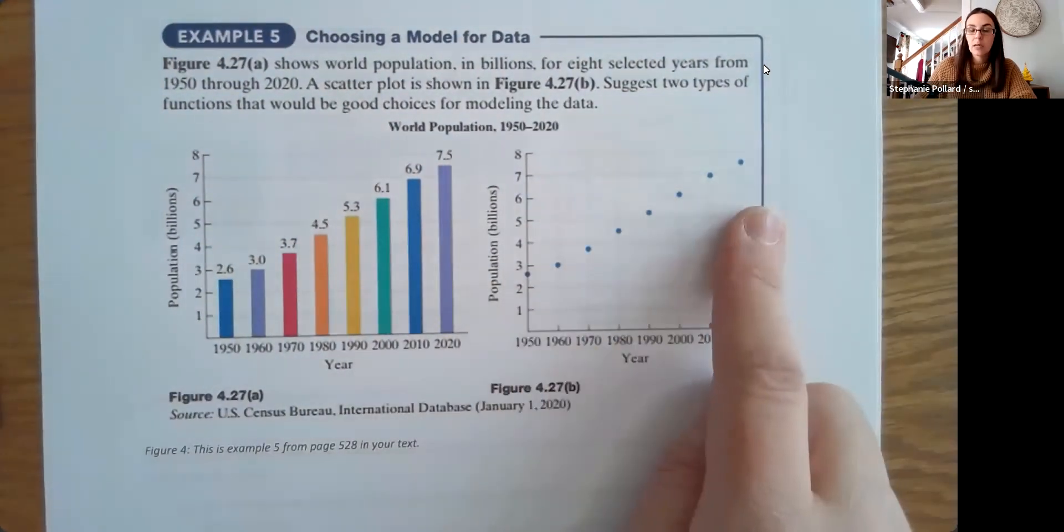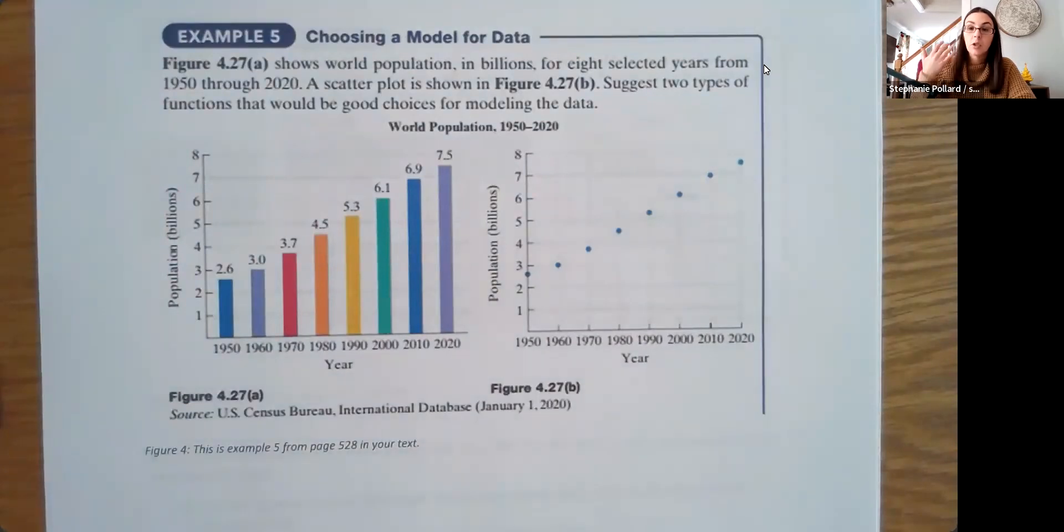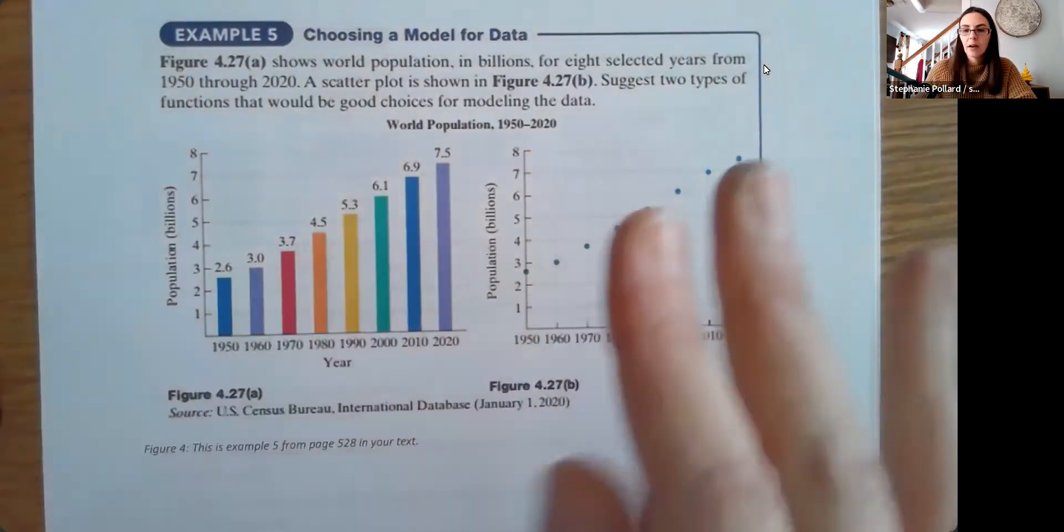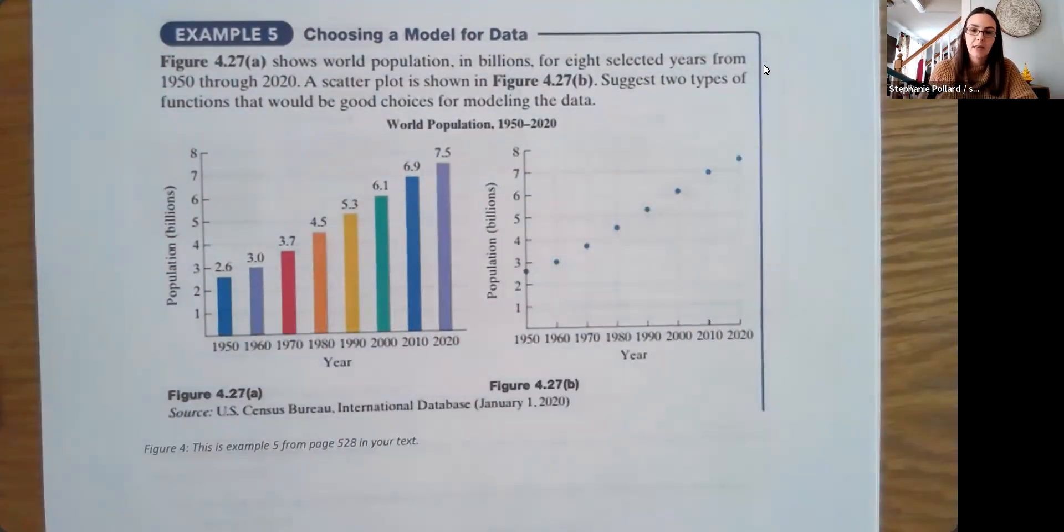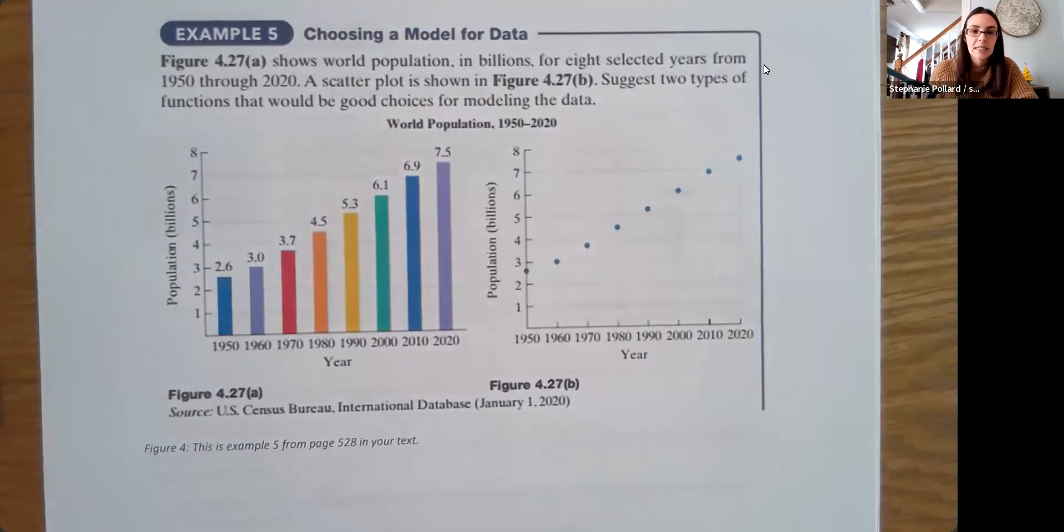And again, that scatter plot tends to be mostly what we do when we're trying to graph initial information to see if there's a pattern. We do like bar graphs too, but if we're looking for that relationship, if there's a pattern in the data, we typically do those scatter plots instead.